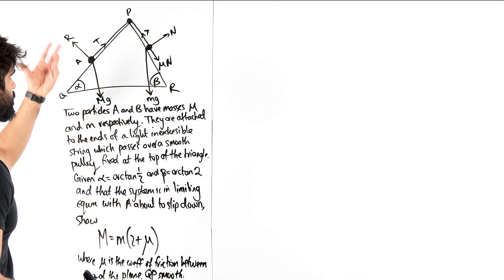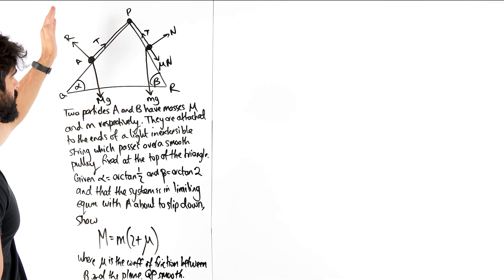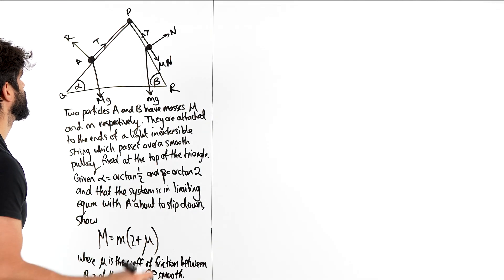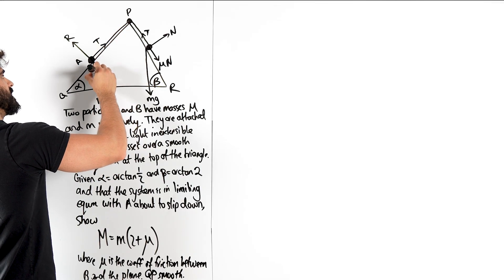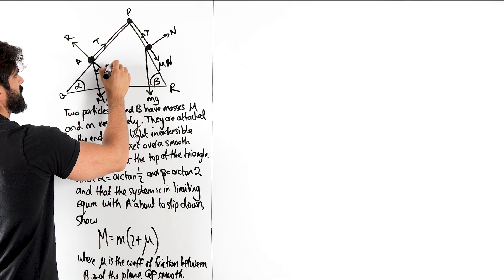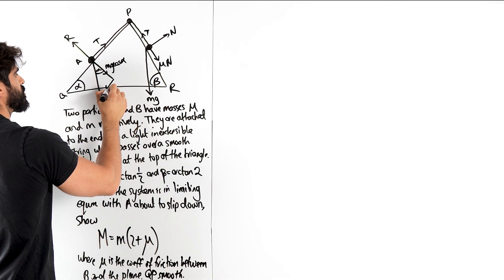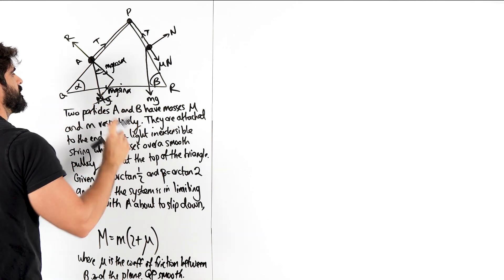So we're going to have mu R where R is N here. Now everything being in equilibrium means all the forces are balanced but we need to make sure that everything is pointing in the ground, out the ground, down the hill, up the hill. So this MG we're going to resolve it into the ground, down the hill. This is alpha, so this being right angle this will be MG cos alpha and this will be MG sin alpha. That's dealt with.